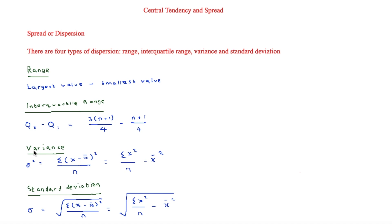Variance shows how spread out the data is from the mean. To work out variance, you find how far each data value is from the mean, square those values, add them up, and divide by n. The general formula is the sum of (x − mean)² / n, which also equals the sum of x² / n minus the mean squared. When using a sample, the formula uses n − 1 as the divisor: s² = sum of (x − mean)² / (n − 1).